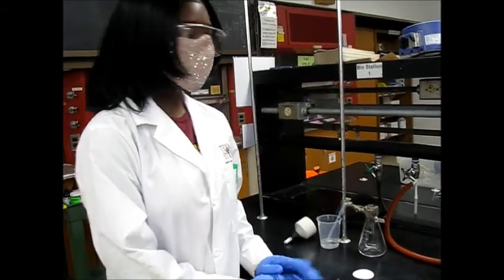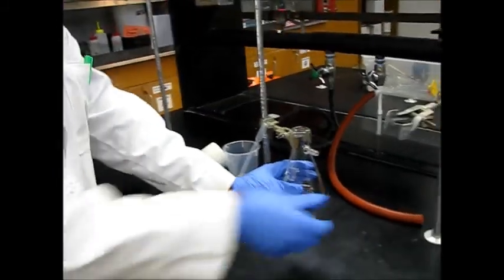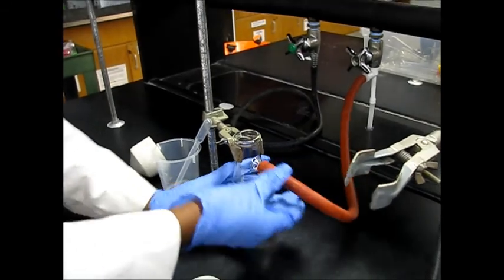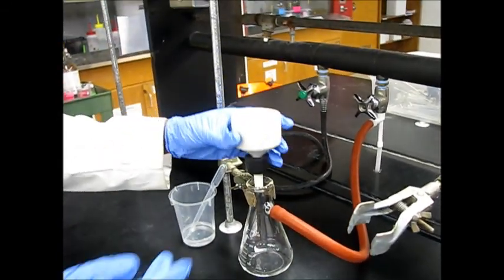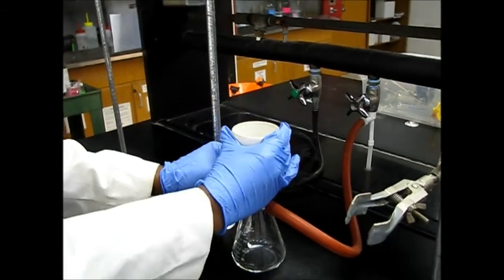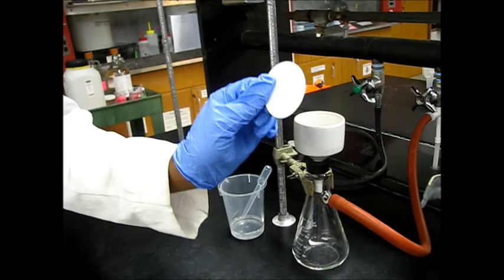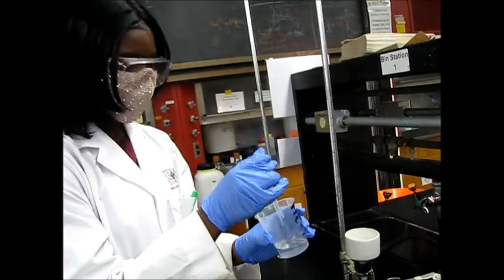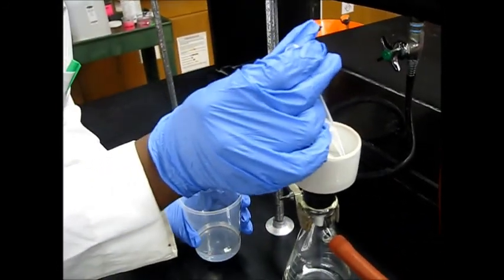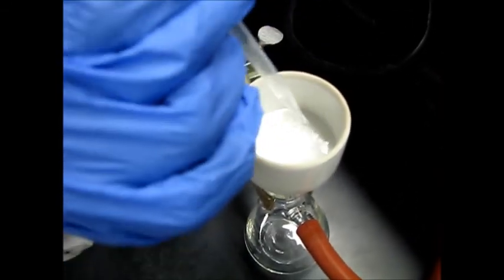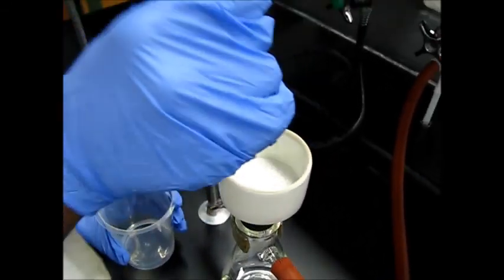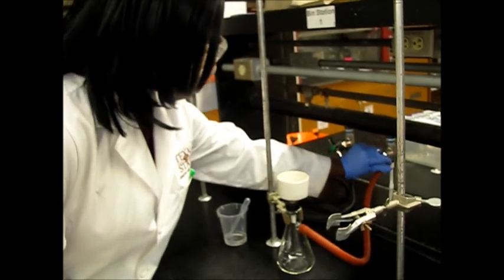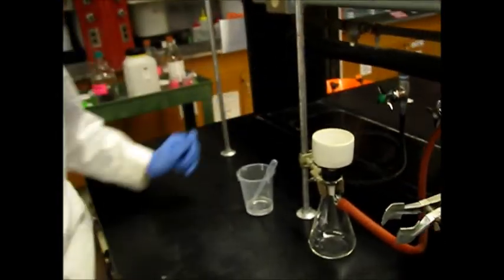Now we are about to set up our vacuum filtration. So we have our vacuum flask here. We are going to attach the hose securely. We have our Buchner funnel. We are going to add that. We are going to get our filter paper. We are going to place that inside. And next we are going to add some water to fully cover the bottom. Now we are going to turn it on. Now it is ready for filtration.